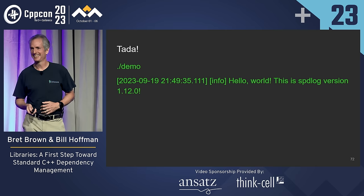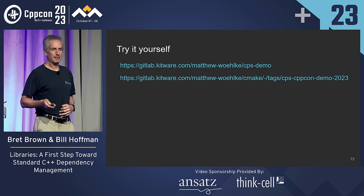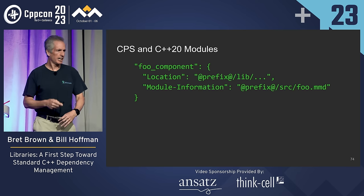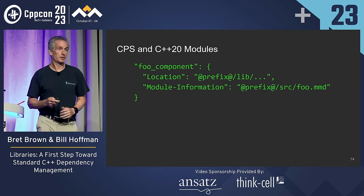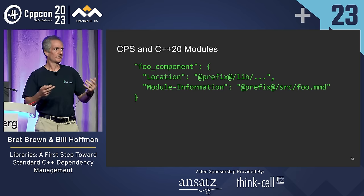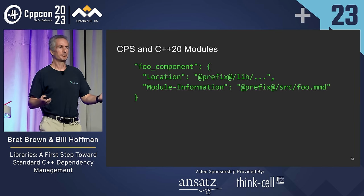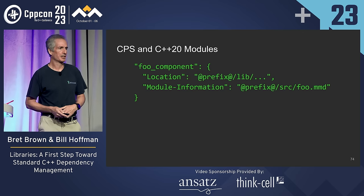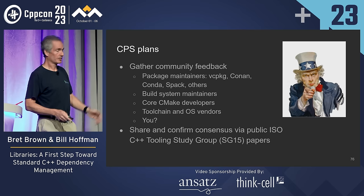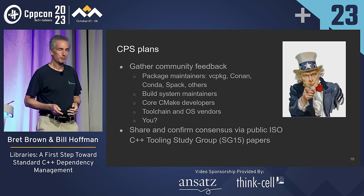You can try it yourself — Kitware has a GitLab instance, and there's a CPS demo plus a fork of CMake from Mac and Bulky. C++ modules are really going to need this because you'll have to compile BMI files since they aren't portable. If I'm installing a binary, I'm going to have to install some C++ code that needs to be compiled to create the binary interface files. We're going to have some module information tag pointing to a file that describes our modules — we're working on this. Going forward, CPS plans: what Brett and I really want is to build a community, with package maintainers from vcpkg, Conan, Conda, Spack, and others, along with build system maintainers from other build systems.